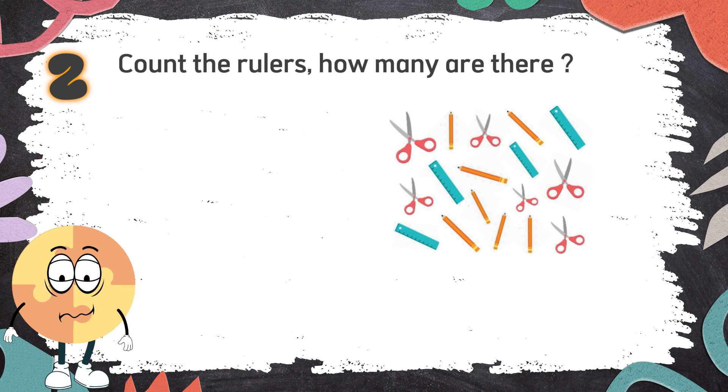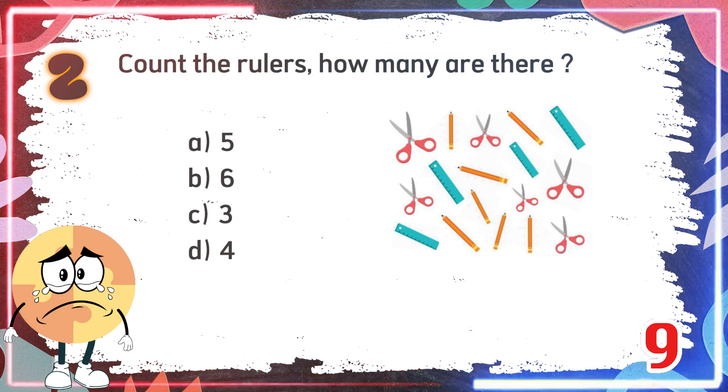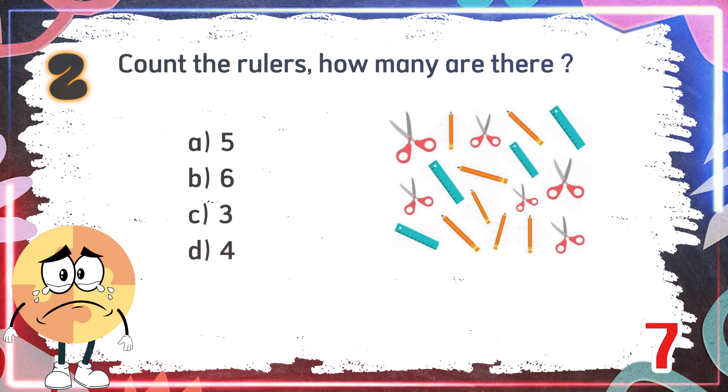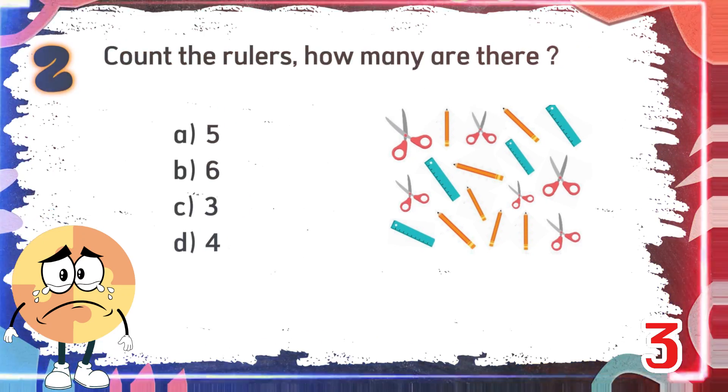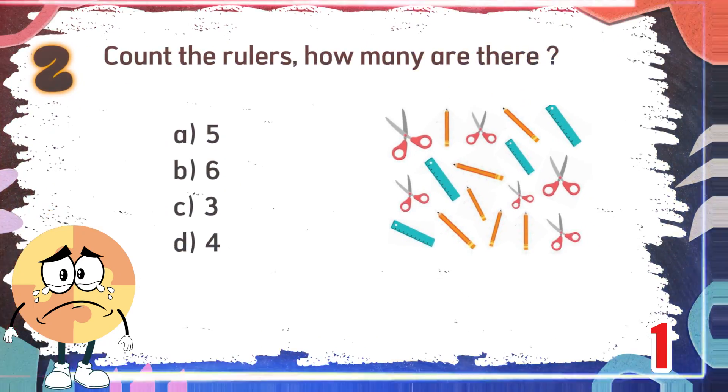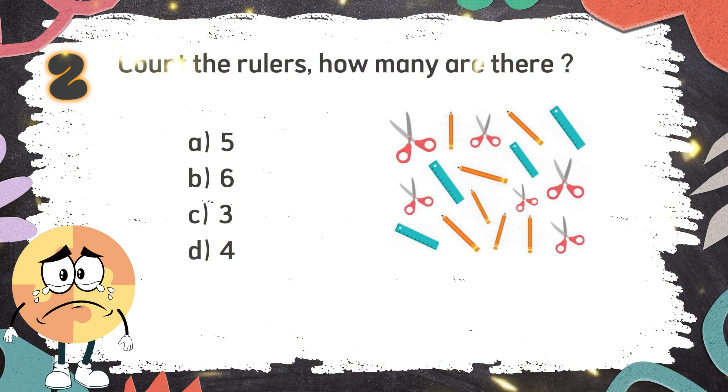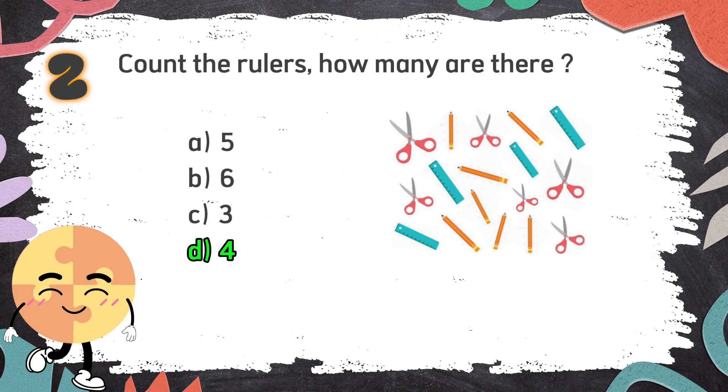Number 2: Count the rulers. How many are there? The choices are A, 5, B, 6, C, 3, D, 4. The correct answer is D, 4.